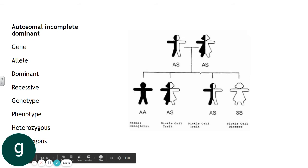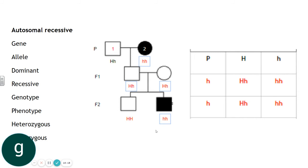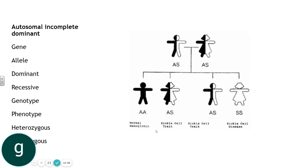Autosomal incomplete dominance is interesting. The classic non-human example is roses: a red rose (R^R) crossed with a white rose (W^W) produces offspring with genotype R^W, giving a pink rose — neither allele is dominant over the other, so you get an intermediate phenotype. In human biology, sickle cell anaemia is an example: red blood cells are an abnormal shape, can't carry oxygen well, get trapped in small vessels, causing pain and a shortened lifespan.